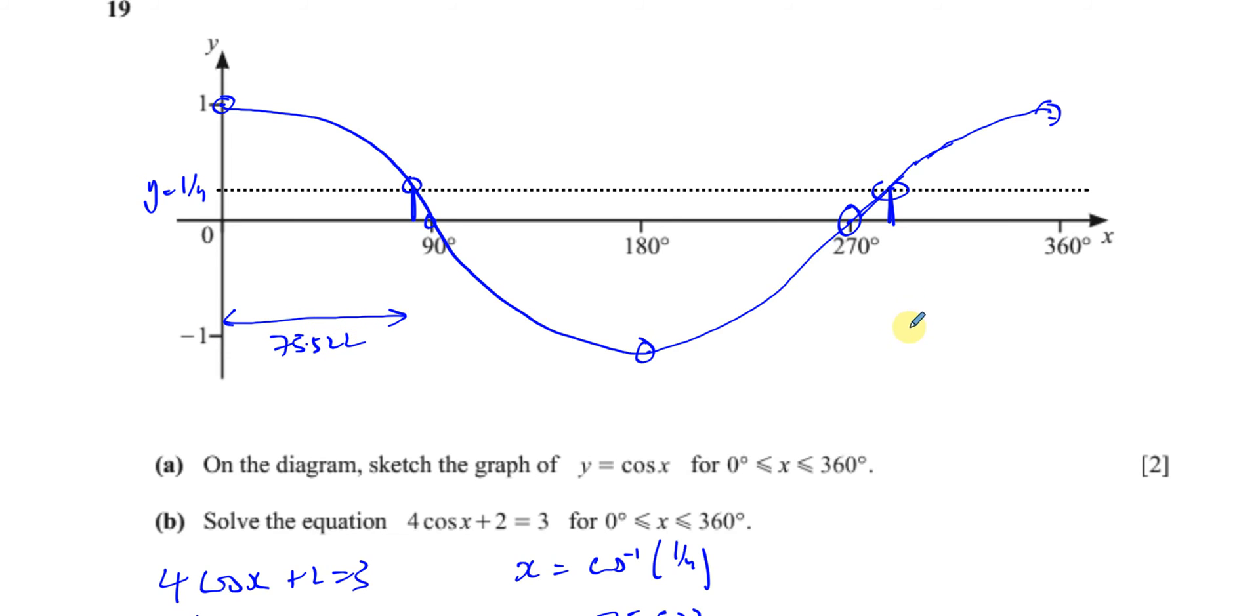And because of the symmetry of this curve about 180°, the mirror line, this distance here is also 75.5°. So if I did 360° minus 75.222°, I will get the angle that I need. Because 360° is the whole way across, so 360° minus that will give us what we need, the size of the angle which is the same cosine ratio as a quarter.